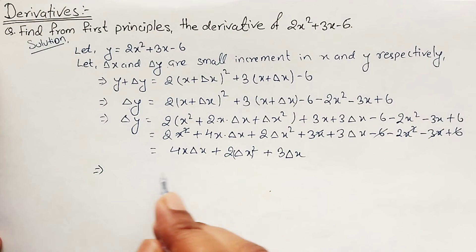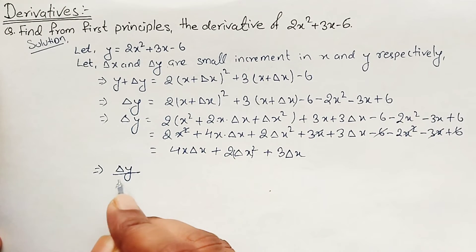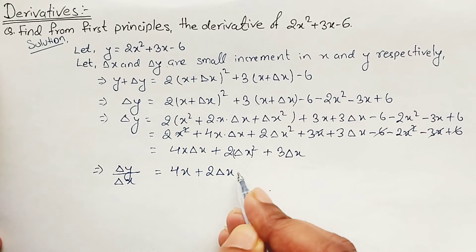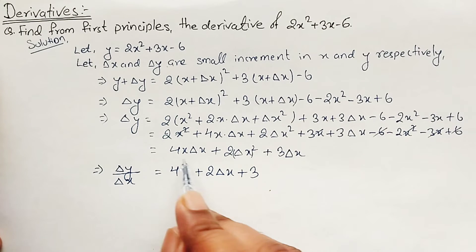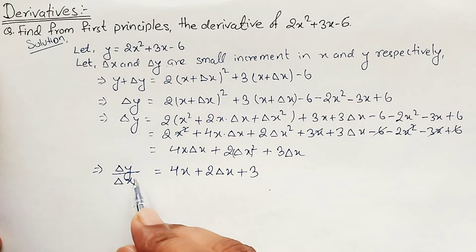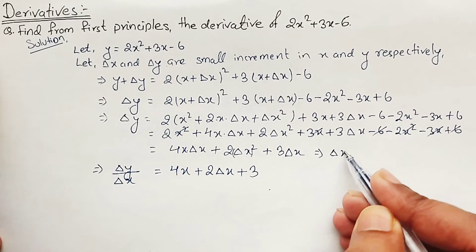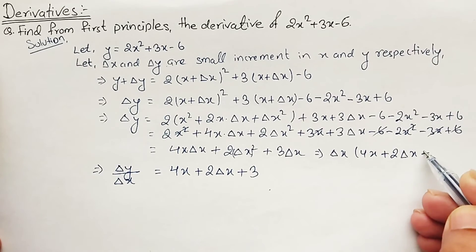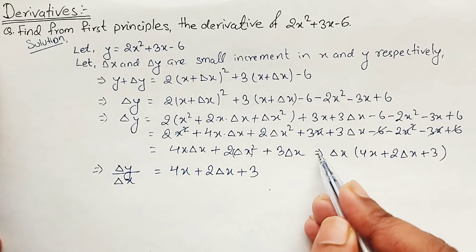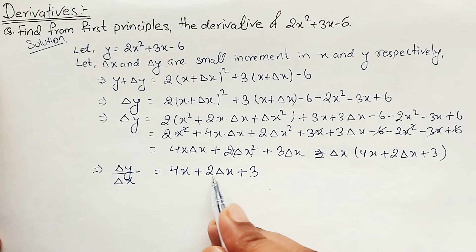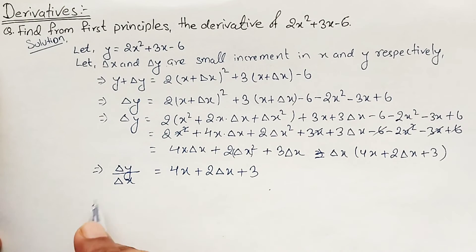We take Delta X common from all three terms, giving: Delta X times (4x plus 2·Delta X plus 3). Bringing Delta X to the other side gives: Delta Y divided by Delta X equals 4x plus 2·Delta X plus 3.